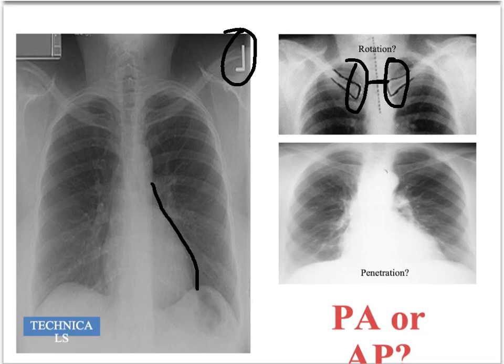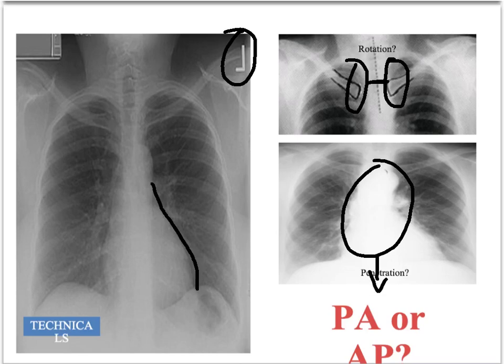Next, consider how well penetrated the X-ray is — is it under- or over-penetrated? If it is under-penetrated, you won't be able to see the vertebral bodies, which you should be able to see all the way through the heart. On this example you cannot see them through this area at all, so it is probably a little under-penetrated. If over-penetrated, you could see further down as well.